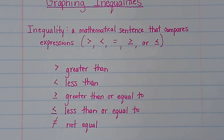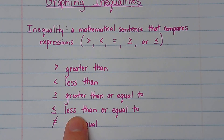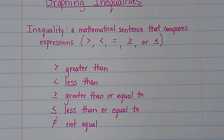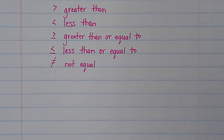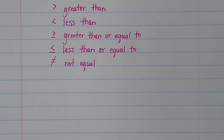All they mean is that the number you're comparing can be greater than that number, or it can be equal to it. That probably doesn't make much sense right now, but I promise it will. It's kind of like saying it can be equal to this, or it can be more. This one is saying it can be equal to that number, or it can be less than that number.